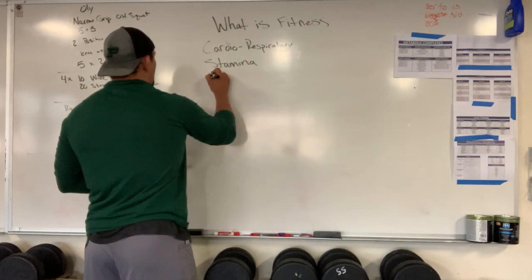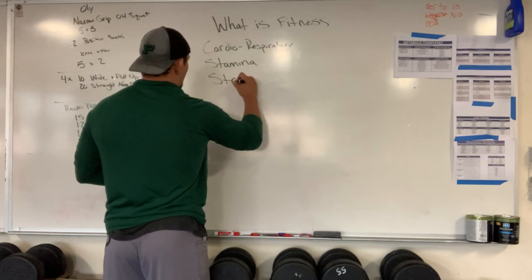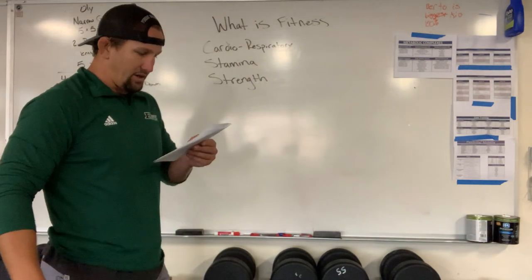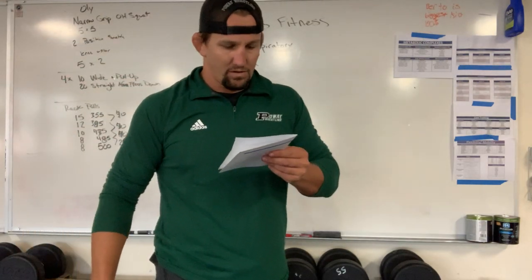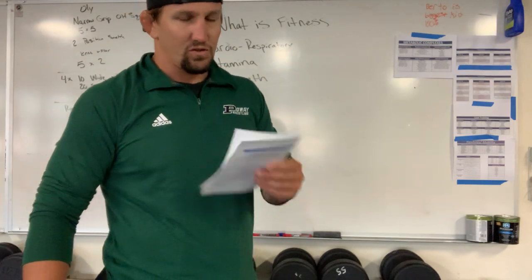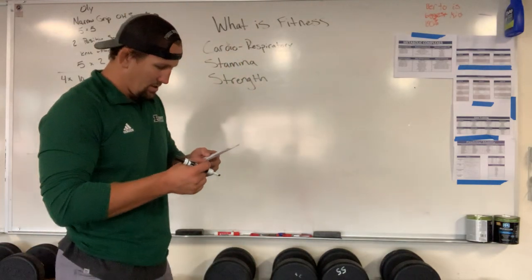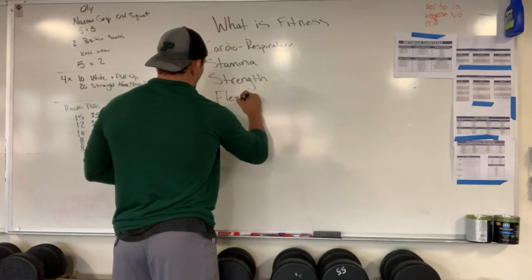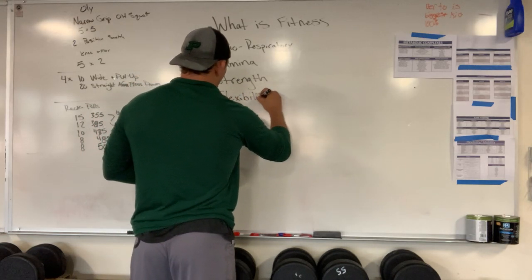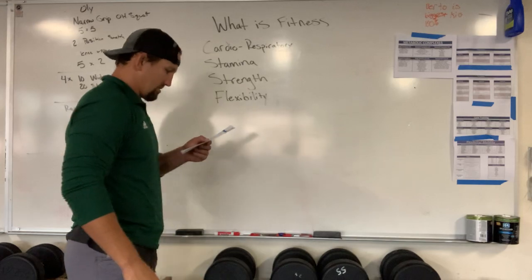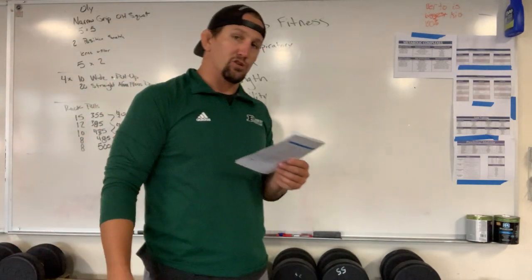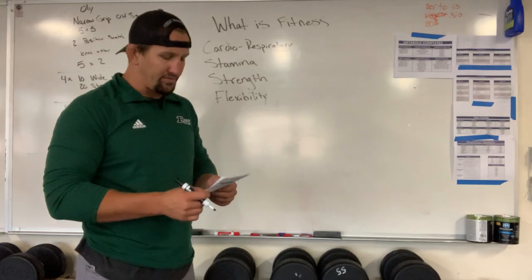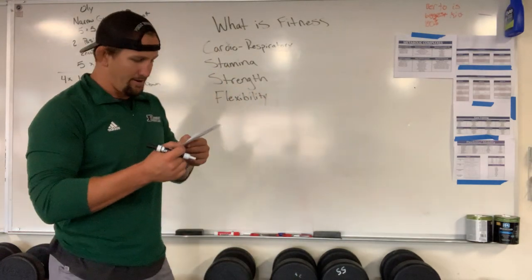Number three: strength — the ability of a muscular unit or combination of muscular units to apply force. Number four: flexibility — the ability to maximize the range of motion. Obviously that's a lot about injury prevention as well. If you can't touch your toes, we need to work on that.